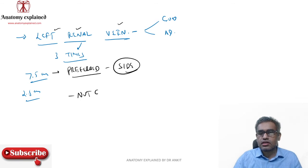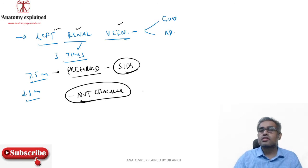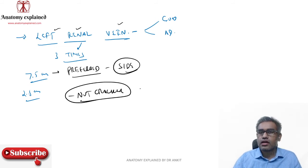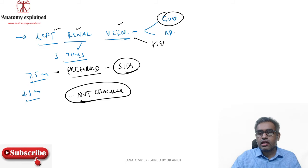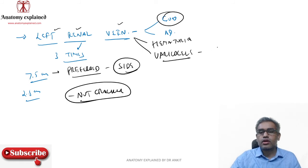Nutcracker syndrome occurs between the superior mesenteric artery and the aorta. When the left renal vein is compressed, it may lead to hematuria or varicocele — because the gonadal vein drains into the left renal vein. This is seen mainly in children, particularly boys presenting with varicocele.